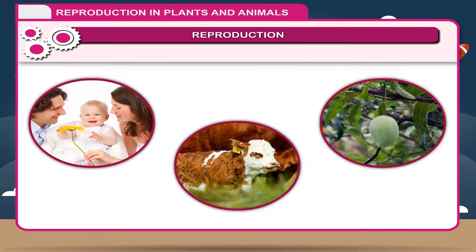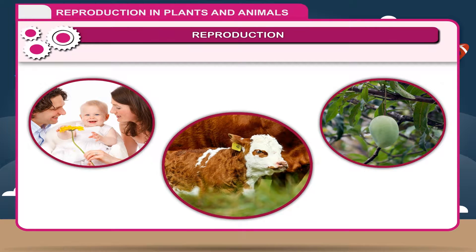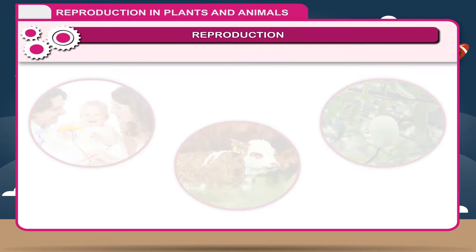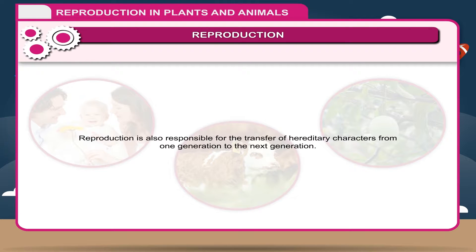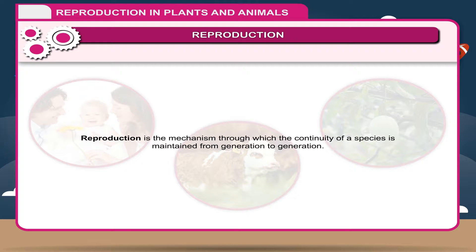Every organism produces young ones of its own kind. Humans produce a child, cow produces a calf, mango produces a mango plant, etc. Besides this, reproduction is also responsible for the transfer of hereditary characters from one generation to the next. Thus, reproduction is the mechanism through which the continuity of a species is maintained from generation to generation.